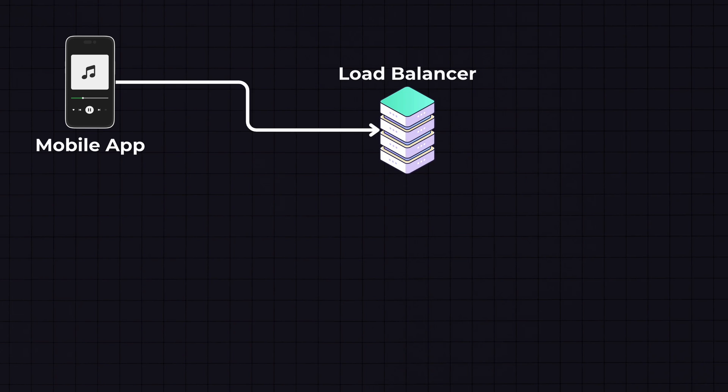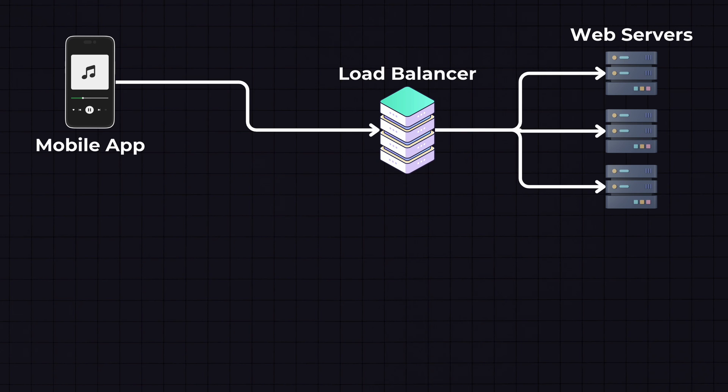The mobile app is the frontend through which users interact with the service. Users can search for songs, play music, create playlists, and so on. When a user performs an action like playing a song, the app sends a request to the backend servers. Before reaching the servers, we have a load balancer that distributes incoming traffic across multiple web servers, improving availability and fault tolerance.